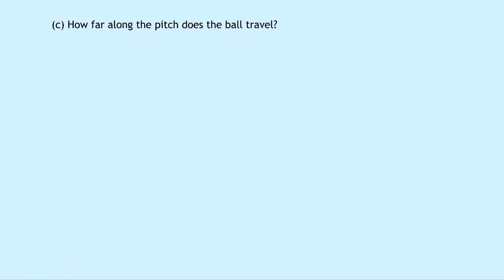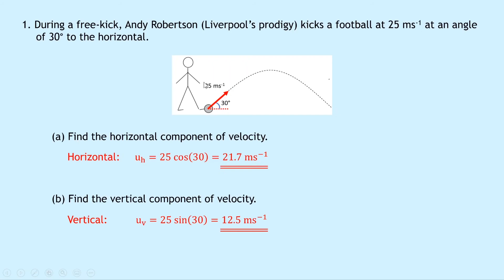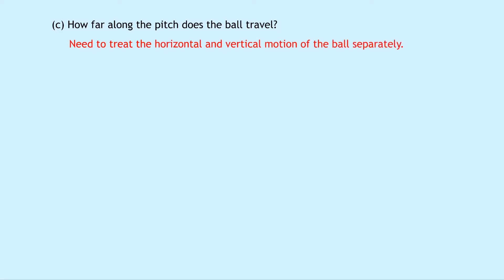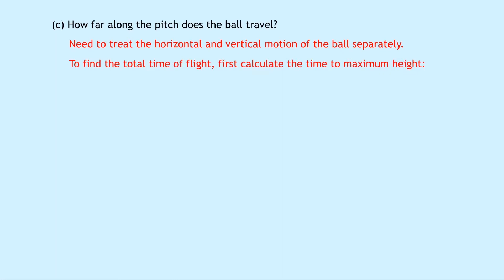Part c says how far along the pitch does the ball travel — that's the range, or horizontal distance traveled. Looking at the picture, we have a full projectile and we want to find this horizontal distance. Remember from the theory video that, just like for projectiles launched horizontally, we need to treat the horizontal and vertical motion separately. To find the total time of flight, we first need to calculate the time to reach maximum height.